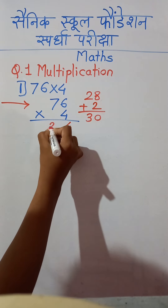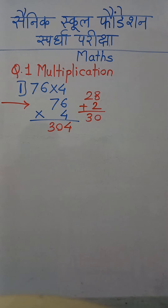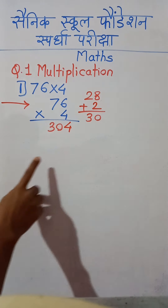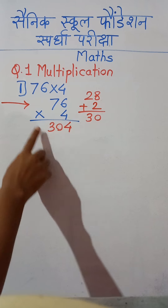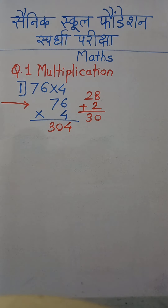So we write 30 here, because there is no digit on the left-hand side of 7. So we get the answer 304.